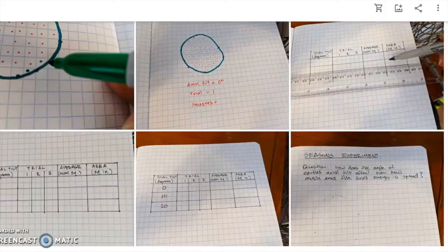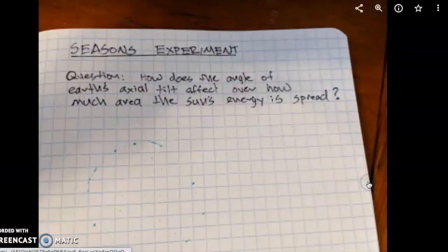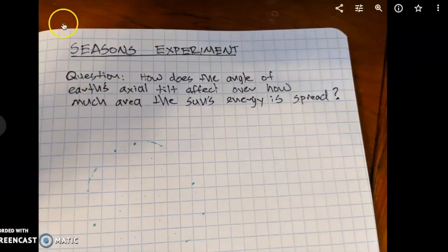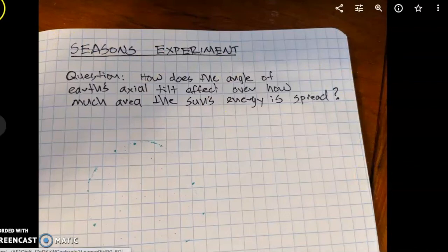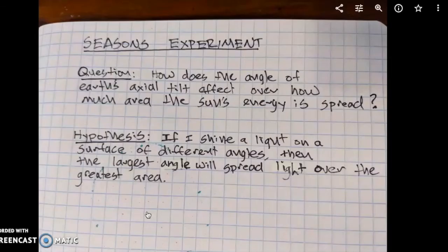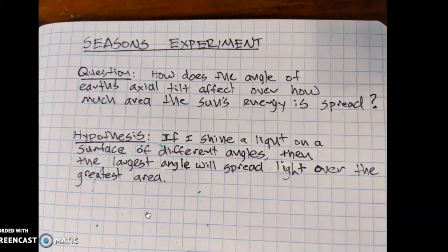So this was the question that I had: How does the angle of Earth's axial tilt affect how much area the sun's energy is spread? With that, I think I explained my hypothesis: If I shine a light on a surface at different angles, then the largest angle will spread light over the greatest area. Let's see if we can support that hypothesis.